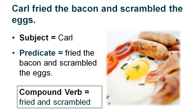We have a compound verb in this sentence: fried and scrambled. But in order to find the predicate, you start with the first verb, then make your way to the second verb. I want you to notice that when you only have two things mentioned — fried and scrambled — you do not need to put a comma before the and.